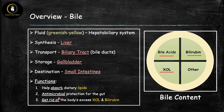Bile has three main functions. Number one, it helps us absorb dietary lipids from the GI tract. Number two, it has antimicrobial properties that help protect the gut. And number three, it allows us to eliminate the body's excess cholesterol and bilirubin so they don't build up and become toxic.